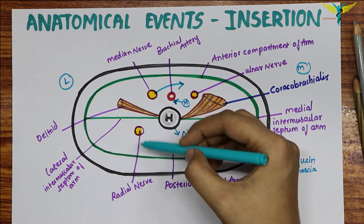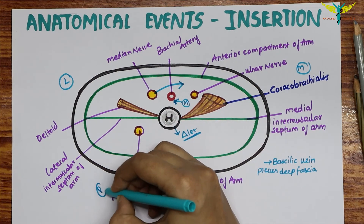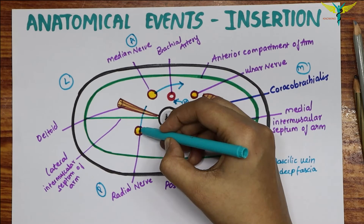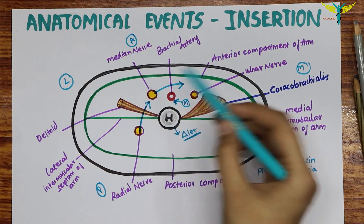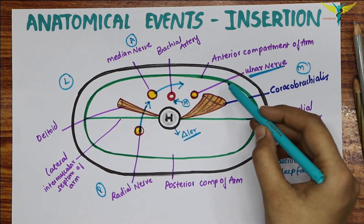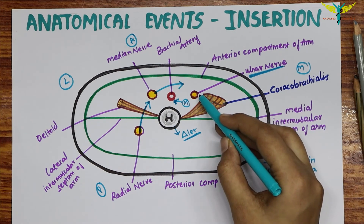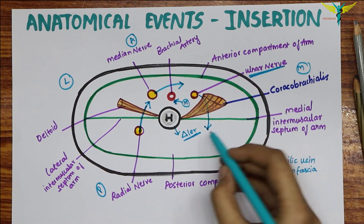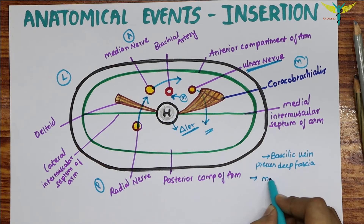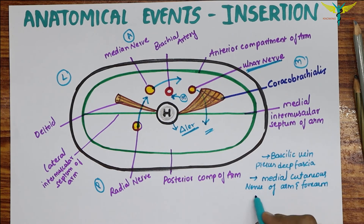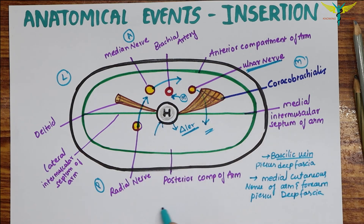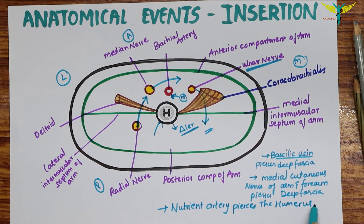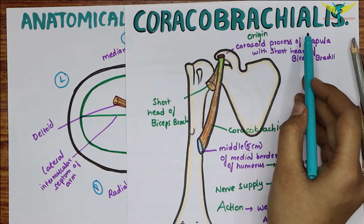The radial nerve pierces the lateral intramuscular septum to pass from the posterior compartment to the anterior compartment. The ulnar nerve pierces the medial intramuscular septum to go into the posterior compartment. The medial cutaneous nerve of the arm and forearm pierces the deep fascia, just like the basilic vein. At this level, the nutrient artery also pierces the humerus.